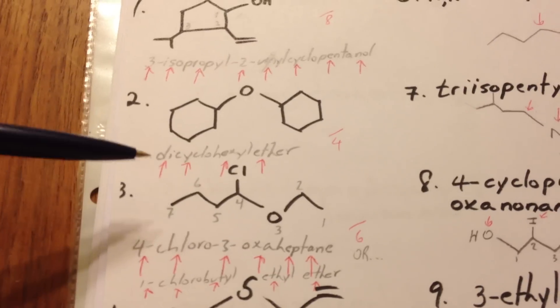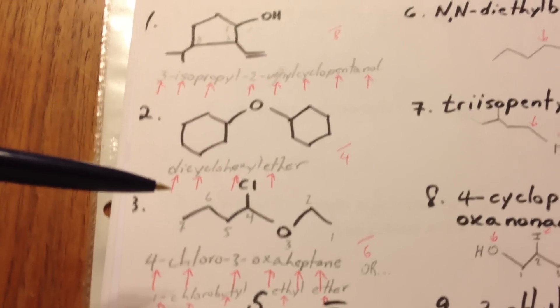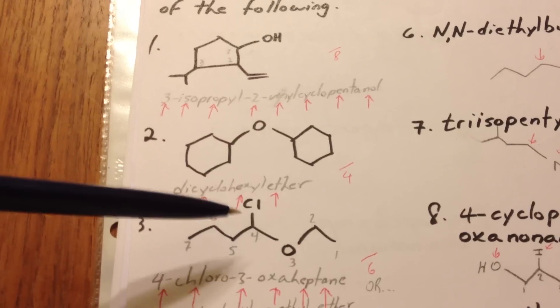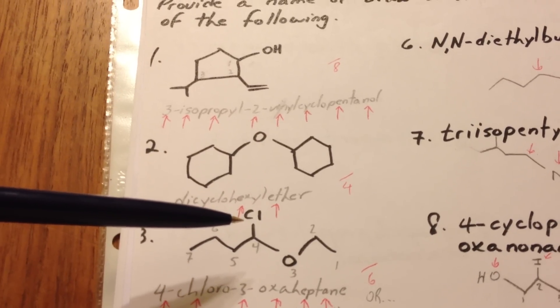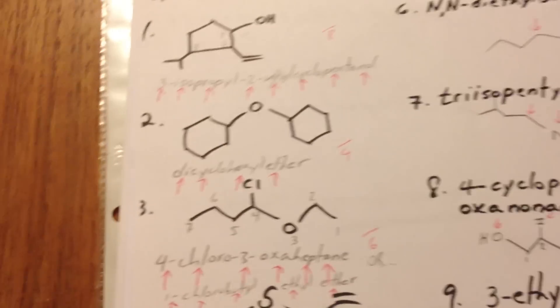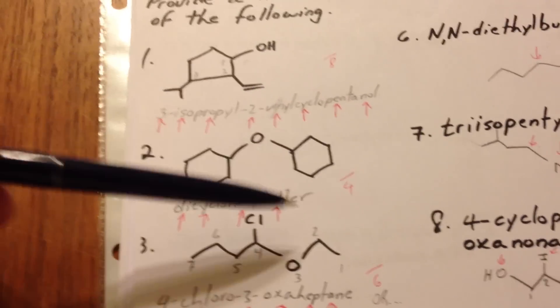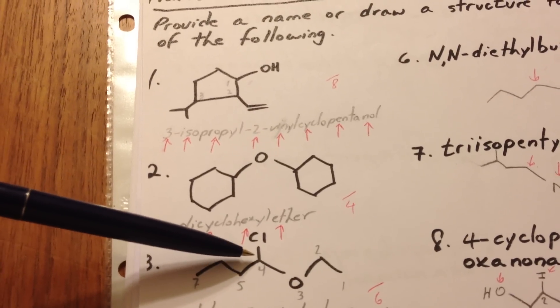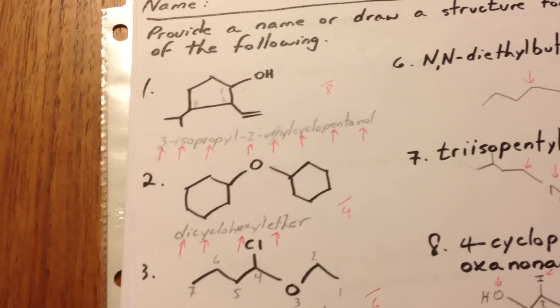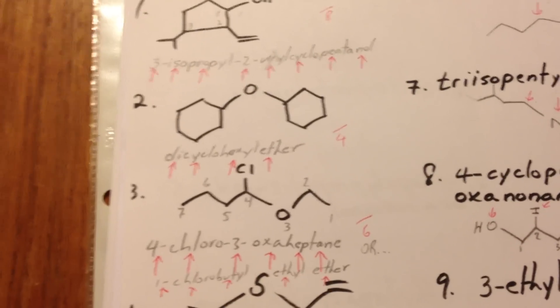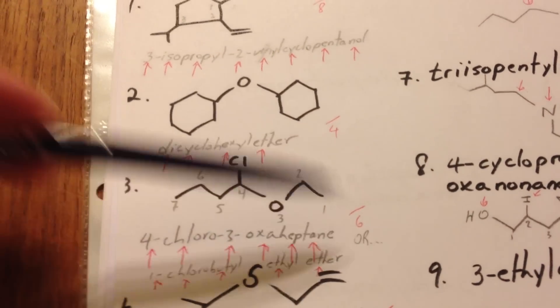Another way of naming the same molecule would be to call it 1-chlorobutyl ethyl ether. You could also call it ethoxy 1-chlorobutane. That one was worth 6.